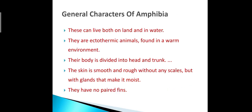In today's video we will start our discussion on superclass Tetrapoda. Tetrapoda means animals which have four limbs. This Tetrapoda is divided into four classes: Amphibia, Reptilia, Aves, and Mammals. In today's video we will discuss the general characteristics of Amphibia and Reptilia, and by the end you will be able to compare the characteristic differences between them.